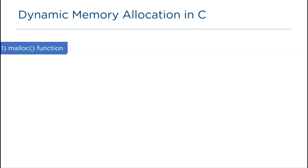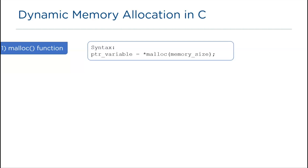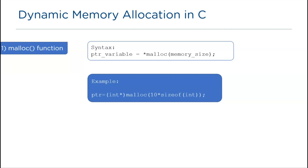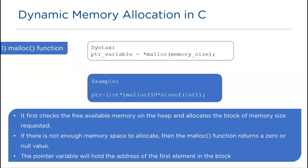When we use the malloc function, a continuous block of memory will be allocated and the pointer variable will hold the address of the first element. The malloc function takes one argument: memory size. For example, if we require 10 bytes we can mention 10, or we can mention sizeof(int). malloc first checks whether continuous memory is available on the heap; if free memory is unavailable it returns 0 or NULL, otherwise it allocates memory as per the requested size and the pointer points to the address of the first element.